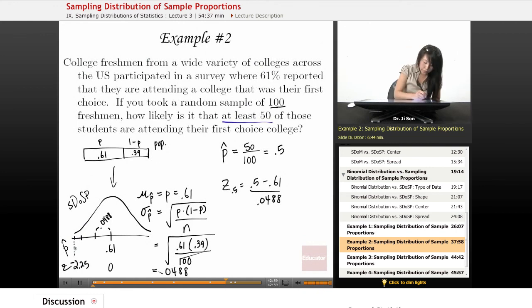And this is 0.5. Okay, and we want to know how likely is it that at least 50 of those students are attending that first-choice college, right? When we say at least, this is the lower limit, right? That's the least, right? And so we're really looking for this whole thing, right?